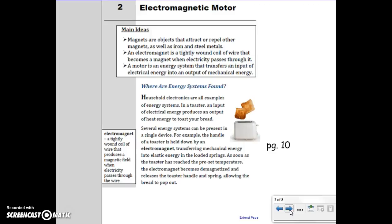Where are energy systems found? Household electronics are all examples of energy systems. In a toaster, an input of electrical energy produces an output of heat energy to toast your bread.